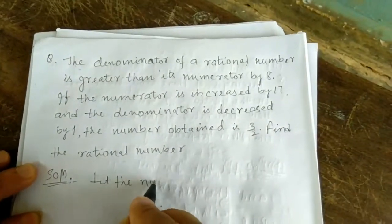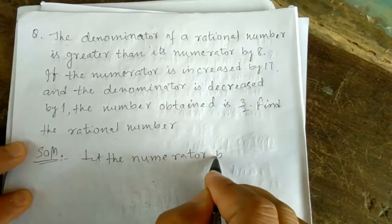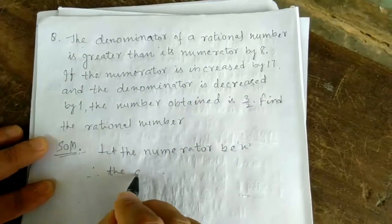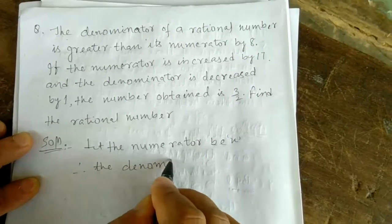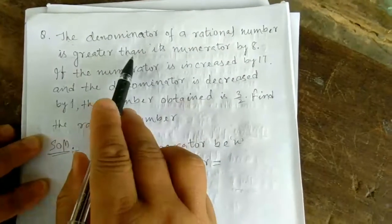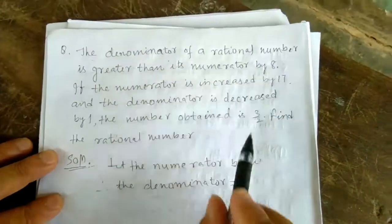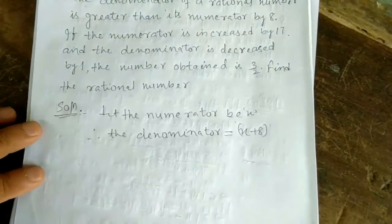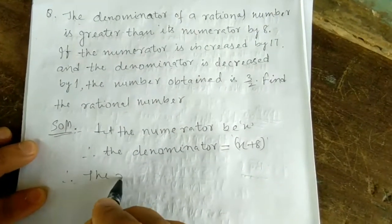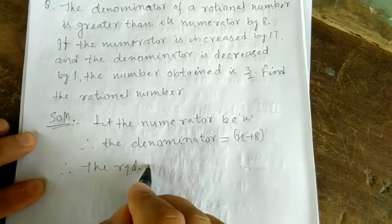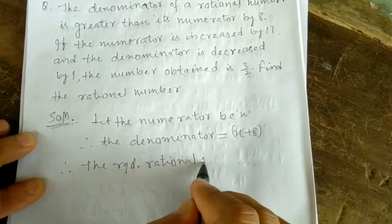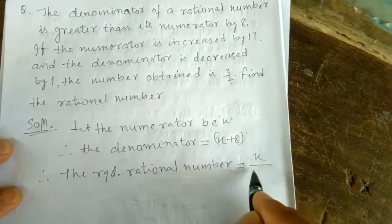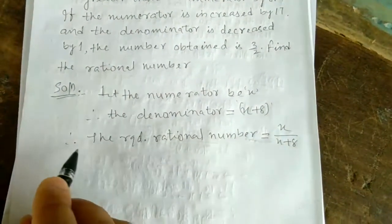Let the numerator be x. Therefore the denominator is greater than its numerator by 8, so denominator = x + 8. Therefore the required rational number is x by (x + 8).